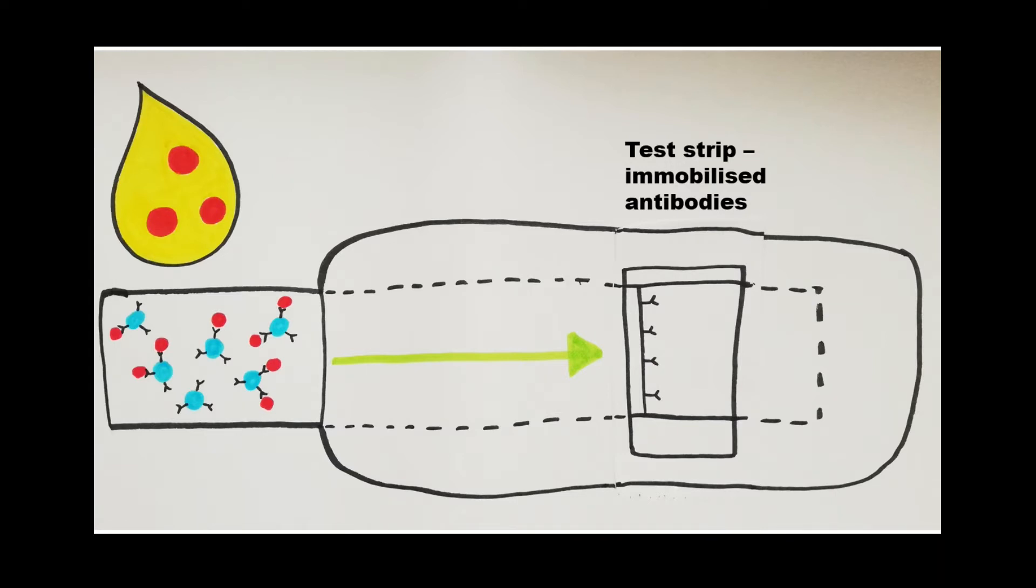The next area we get to is the test strip. This is a line with more antibodies for HCG on it. These antibodies are not attached to blue beads; they are completely stuck down to the paper and we say they are immobilized and they can't move.